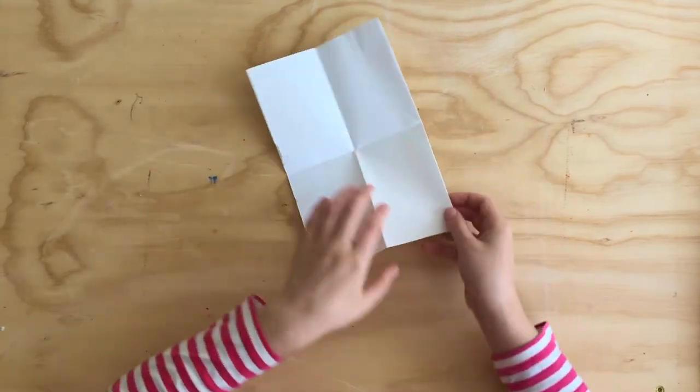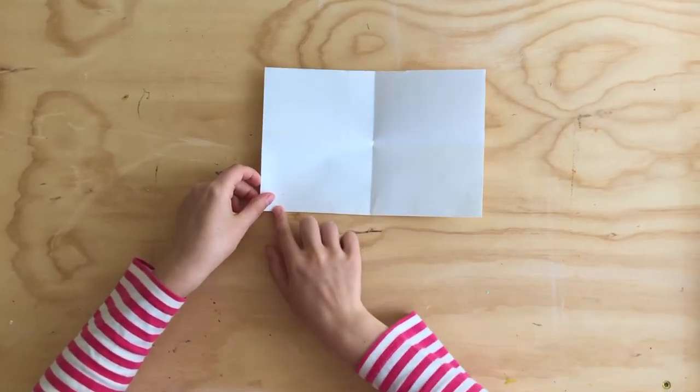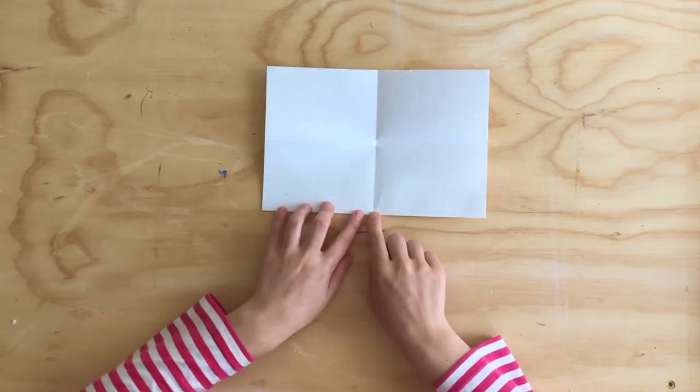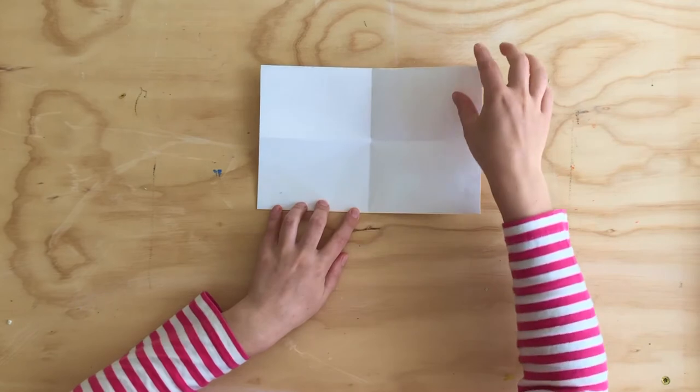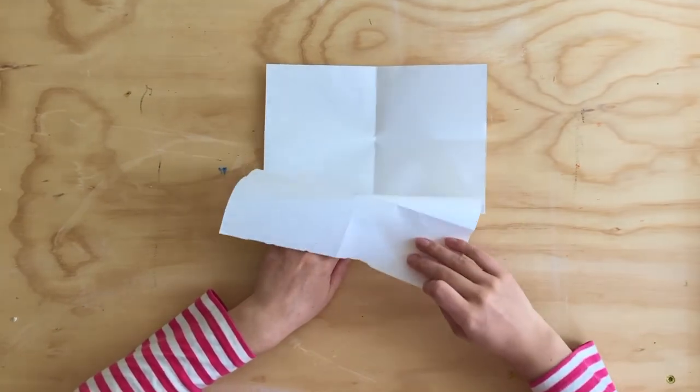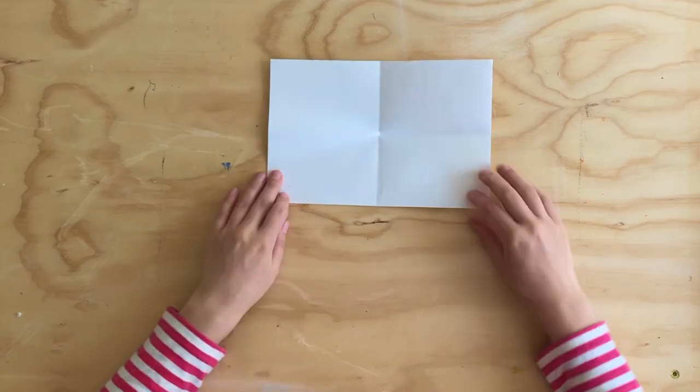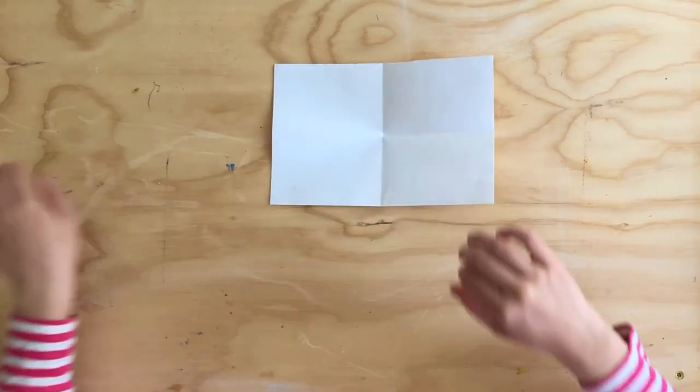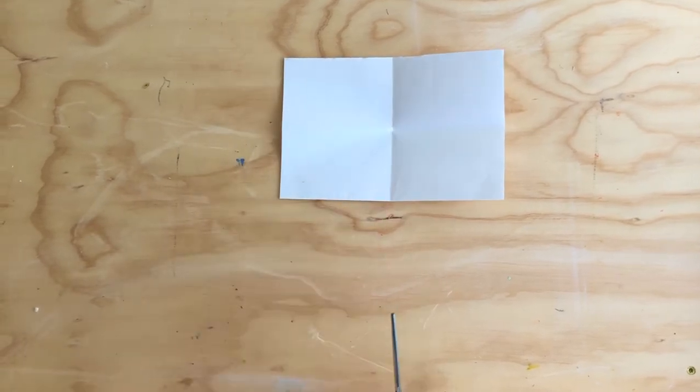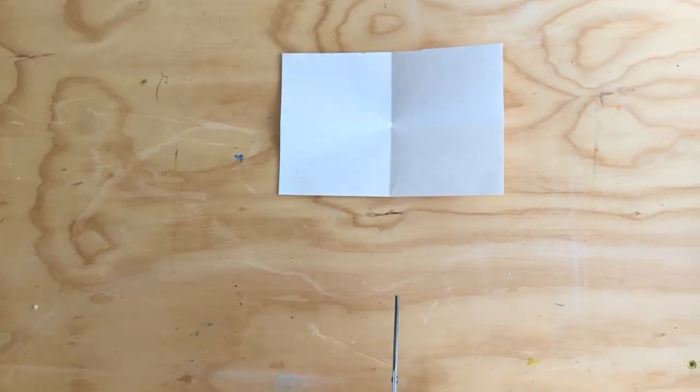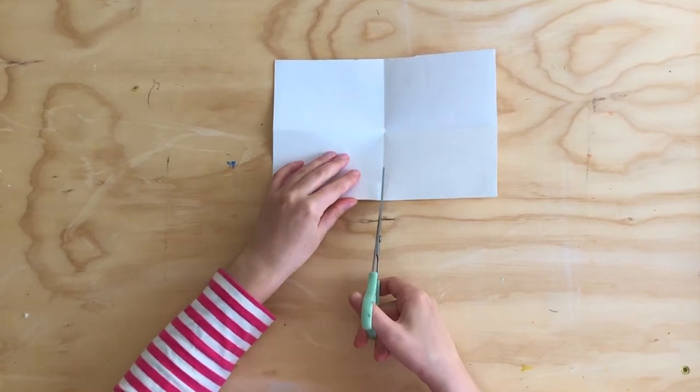So we want to find the folded edge because we're going to be cutting this line right here. Okay, so not the open edge. We need to cut from the closed folded edge here, and we're gonna take our scissors and cut from the folded edge to where they intersect in the middle.